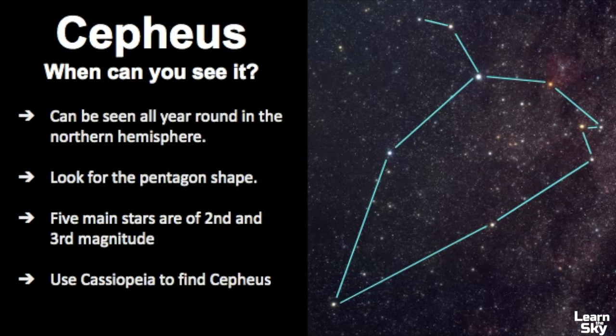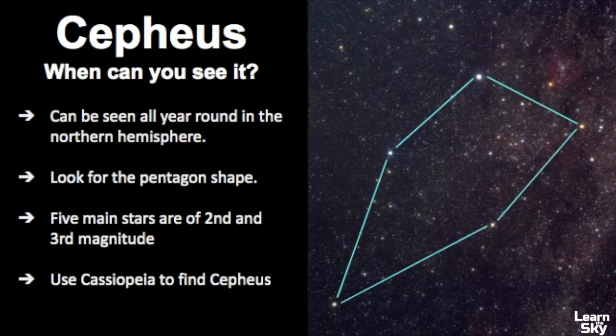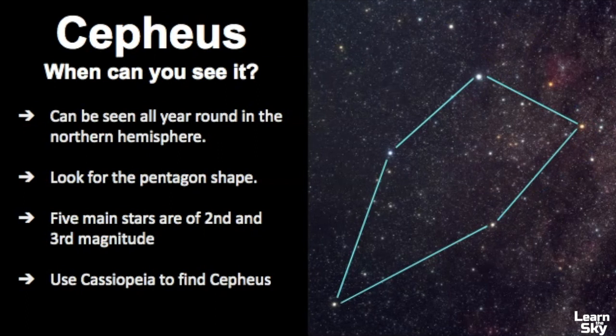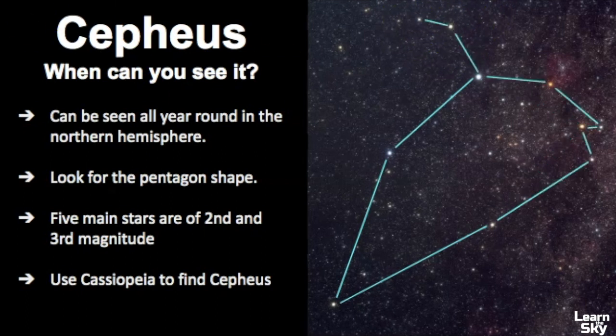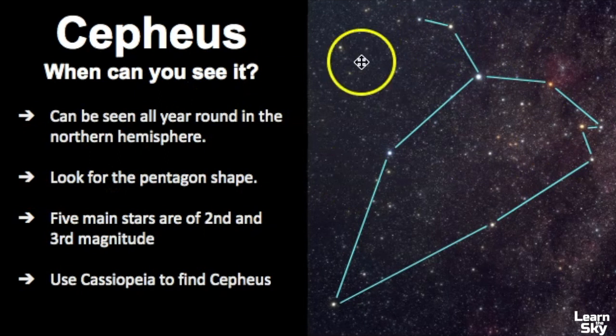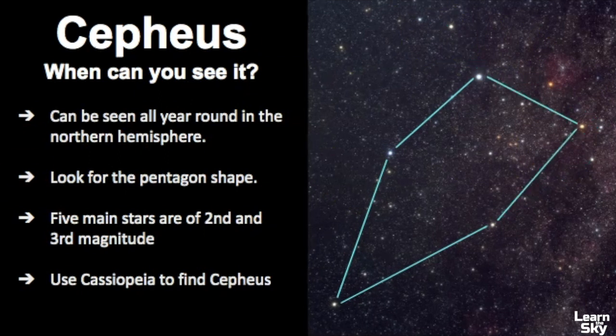This is the official star pattern right here of Cepheus. It has kind of some extra lines and stars here. However, when I see it in the sky, this is the pattern that I pick out because these are the five main stars of Cepheus. So sometimes I don't always see the little details right here of this star pattern, but rather I see a pentagon shape in the sky.